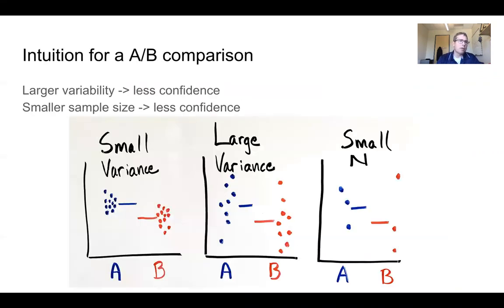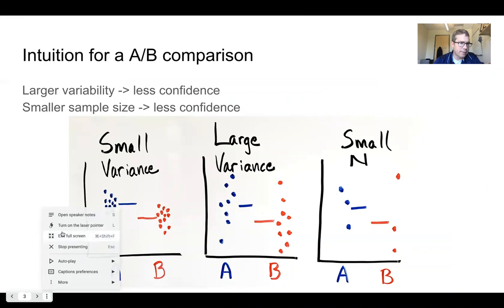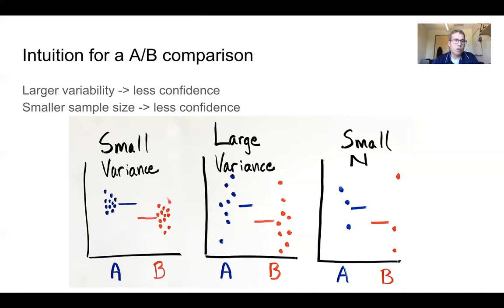We'll start by giving you a little intuition for an A-B comparison, which most of us are doing in our proteomics. On the left hand side, you see here an experiment where group A and group B have a difference between their averages. And they have a pretty small variability or standard deviation variance around that average.